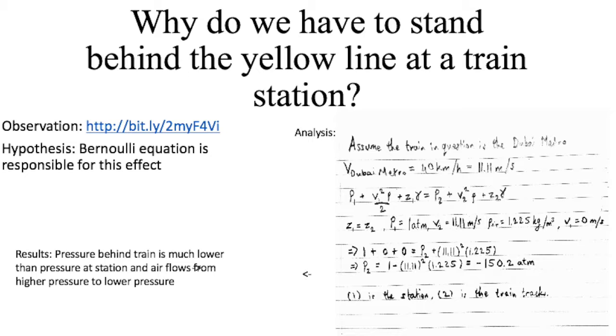What this shows us is that once the train moves past the station, it creates a low pressure zone behind it. And as air flows from high pressure to low pressure,